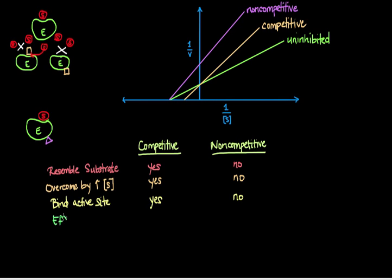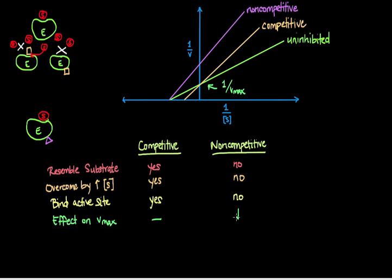Now let's look at the effect on VMAX, and this is where the Lineweaver-Burk plot really comes in handy. We look at the Y-intercept, which equals 1 over VMAX. For competitive inhibitors, the Y-intercept doesn't change, so VMAX stays the same — the effect on VMAX is none. For non-competitive inhibitors, the Y-intercept has increased, and because it's a reciprocal, this means VMAX has decreased. So the effect on VMAX is a decrease for non-competitive inhibitors.